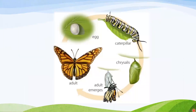The butterfly first lays an egg on the Rui or milkweed leaf. In about a week's time, the larva emerges from the egg — this is also called the caterpillar. On emerging from the egg, the hungry caterpillar eats up the leaf on which it lay when in the form of an egg. This makes its growth rapid.